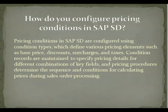How do you configure pricing conditions in SAP S.D.? Answer: Pricing conditions in SAP S.D. are configured using condition types, which define various pricing elements such as base price, discount, surcharges, and tax. Condition records are maintained to specify pricing details for different combinations of key fields, and pricing procedures determine the sequence and conditions for calculating price during sales order processing.